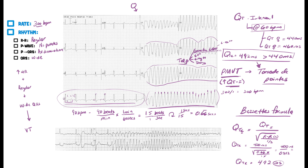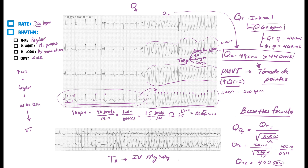Here's what I want you to know: you see Torsades de Pointes on the EKG — the QTc is prolonged, we approximated 492 milliseconds — and it progresses into this polymorphic V-tach twisting along the isoelectric line. The first thing you want to do for this patient is treat them with IV magnesium sulfate. That is the one big thing you need to give patients showing signs of Torsades.